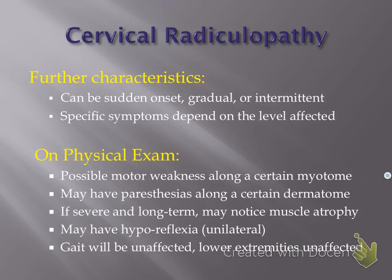On physical exam with cervical radiculopathy, you might notice motor weakness along certain myotomes involved in that nerve root, and paresthesias along a certain dermatome. If it's severe and long-term, you may notice muscle atrophy. You may also have hyporeflexia, which will be unilateral — for example, a patient with C7 radiculopathy on the right side may have a normal left tricep reflex but a totally blunted right tricep reflex. With a cervical radiculopathy, their gait will be unaffected because the spinal cord is not being pinched, and the lower extremities will not be involved.